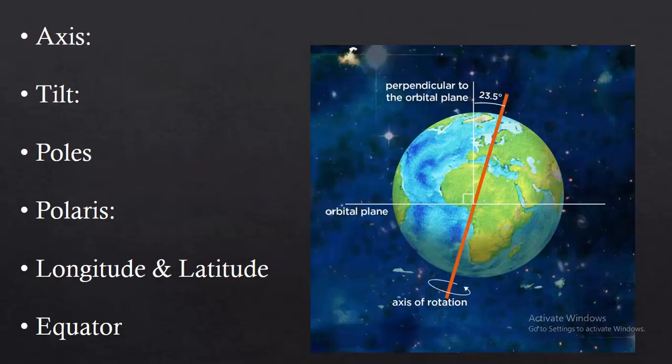Beginning my lecture, the first terminology is Axis. What is an axis? The Earth rotates about an imaginary line that passes through the north and south pole of the planet. This line is the axis of rotation of Earth. The red line showing in the diagram on the globe is known as the axis of rotation of the Earth. Now the second one is Tilt. What is a tilt? Instead of rotating upright, the Earth's axis is tilted approximately 23.5 to 24 degrees.